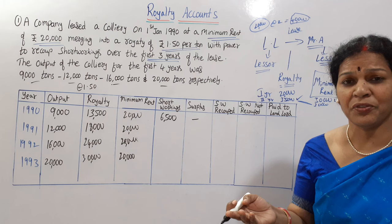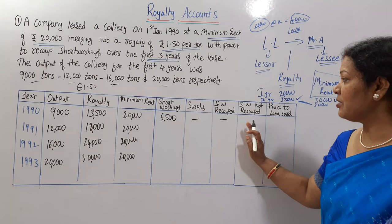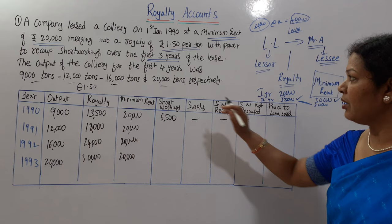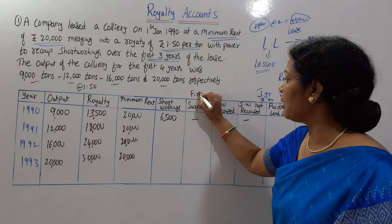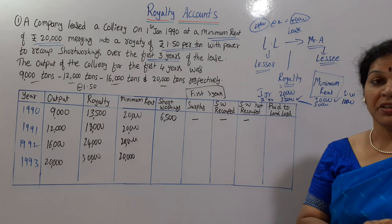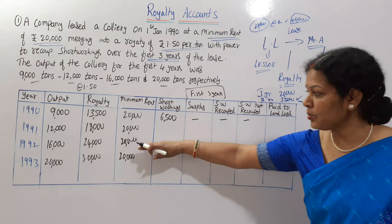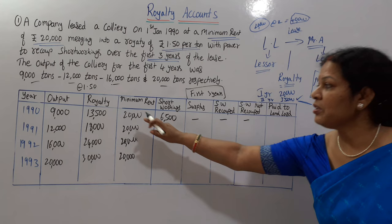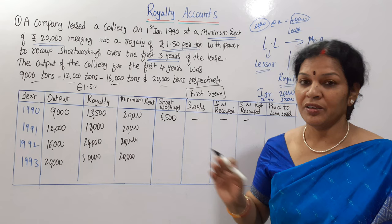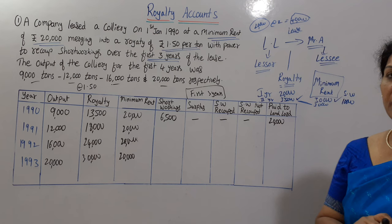For the short workings recouped column: we have short workings but no surplus to recoup them against, so short workings recouped is nil. For short workings lapsed: since we are still within the first three years, the short workings are not yet lapsed — there is still time to recover them. Pay to landlord: whichever is more — 20,000 or 13,500 — obviously 20,000 is more, so 20,000 is paid to the landlord in year one.